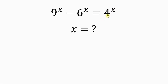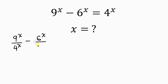Our first step will be to divide through by 4 to the x. So we have 9 to the x divided by 4 to the x, minus 6 to the x divided by 4 to the x, equal to 4 to the x divided by 4 to the x.